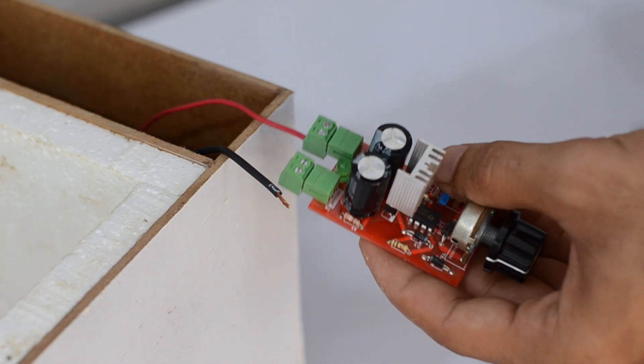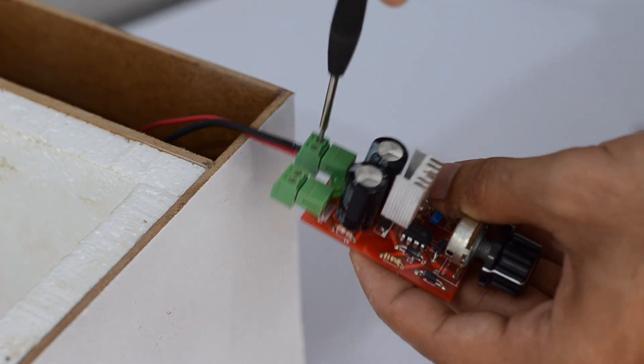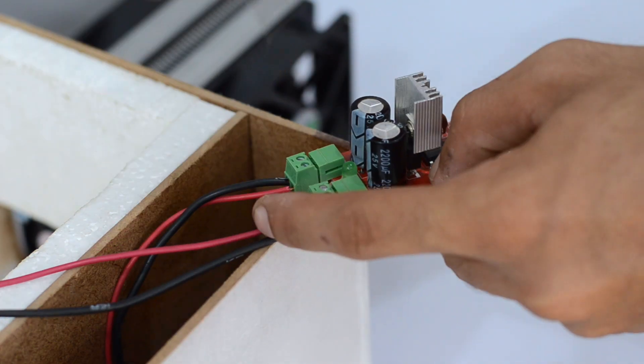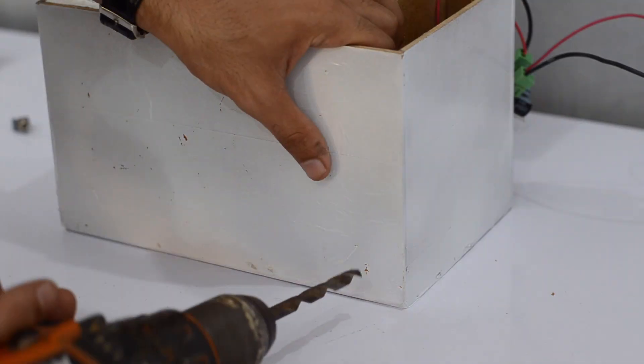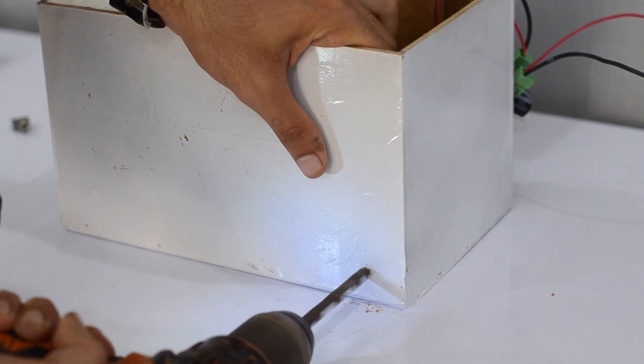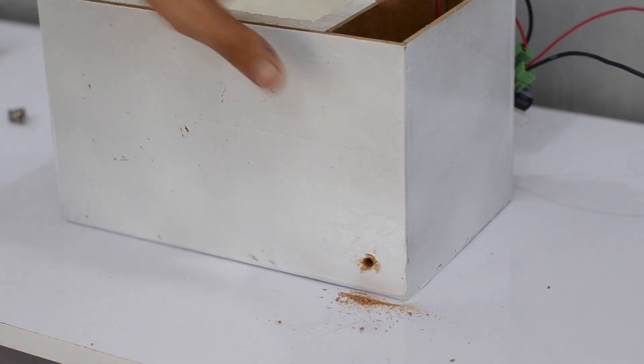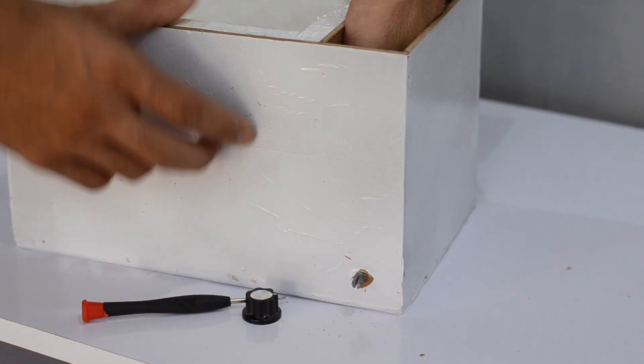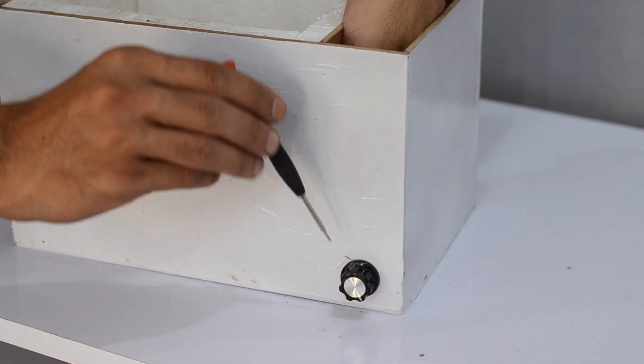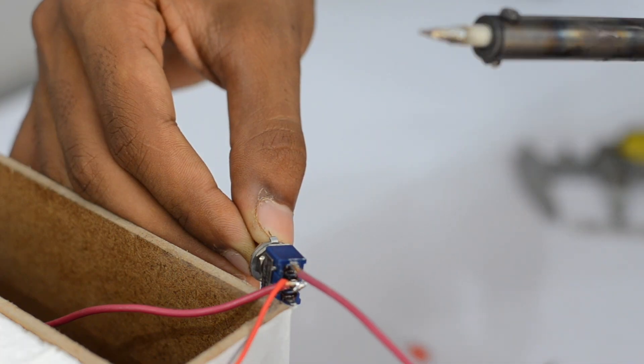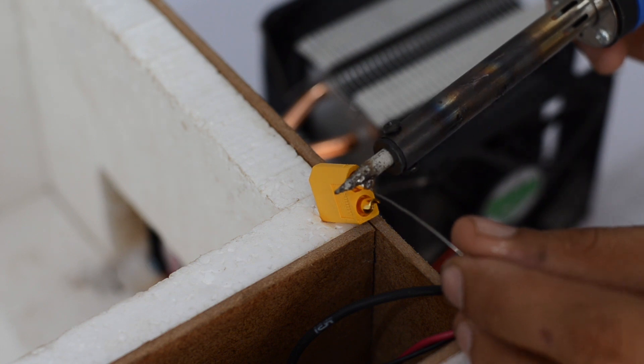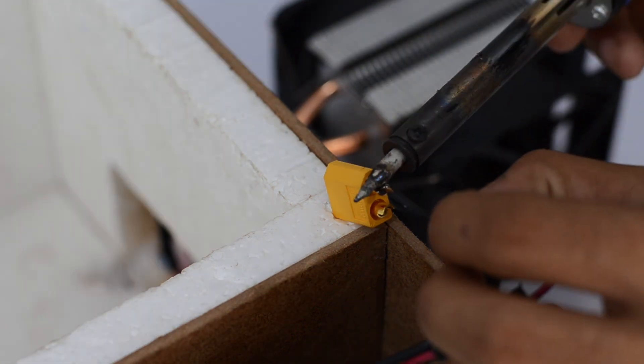I have connected the output of the pulse width modulation controller to the Peltier unit and mounted it inside the smaller cavity. A switch is then added to the input side and an XT60 connector is used for the convenience of connecting a battery pack later.